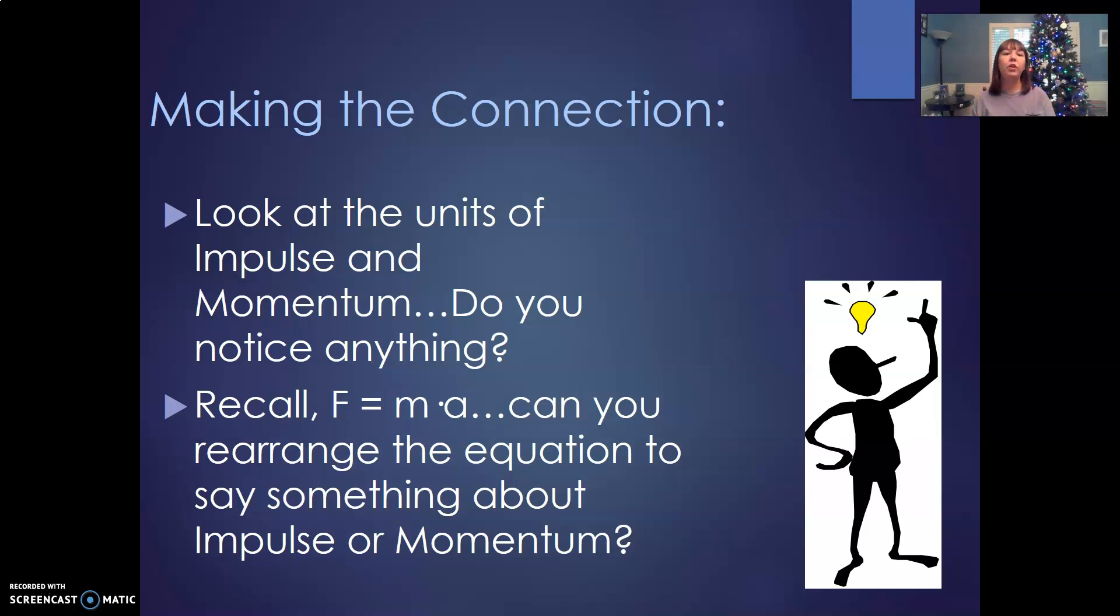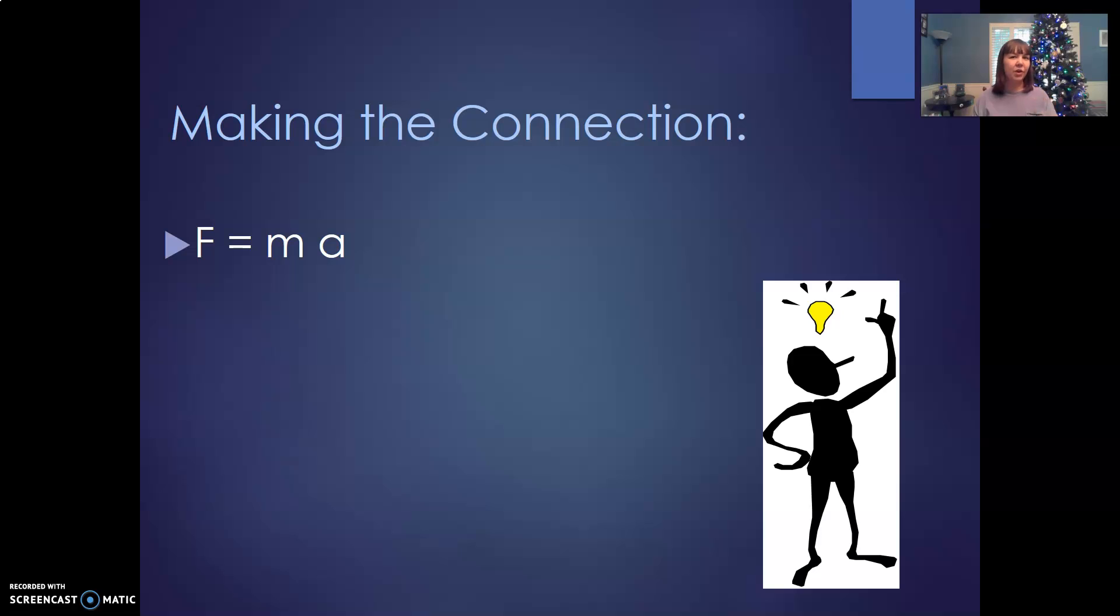Now look at our units of impulse and momentum. You notice anything? There's newtons and seconds and meters per second and kilograms. If you remember Newton's second law, F equals ma, we start with F equals ma. Now what's acceleration? Acceleration is the velocity divided by the time, right? Remember our motion formulas? So we can put velocity divided by time in for acceleration in F equals ma. Now let's take that t over to the side. We'll take t and multiply it on both sides. So F·t equals m·v.